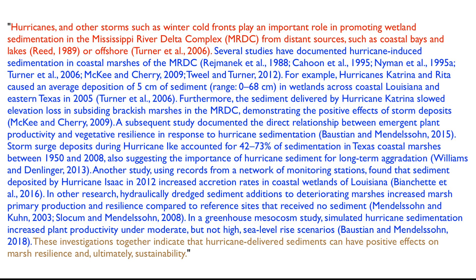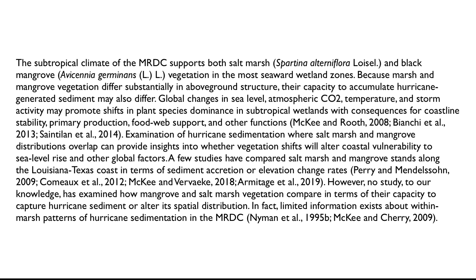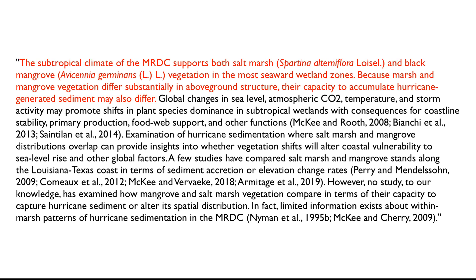That's not the only way to write a paragraph. You might need to take a different approach depending on what you are trying to say. Here's another paragraph from the same paper that provides the reasoning for the study. In this case, there is not a single topic sentence but two sentences that introduce the idea that different types of vegetation may have different effects on sediment deposition. The subtropical climate of the Mississippi River Delta complex supports both salt marsh and mangrove vegetation in the most seaward wetland zones. Because marsh and mangrove vegetation differ substantially in above-ground structure, their capacity to accumulate hurricane-generated sediment may also differ.